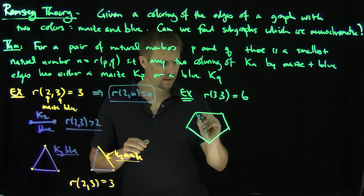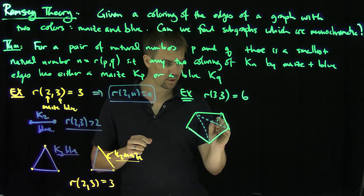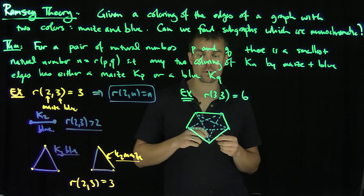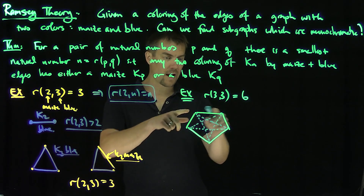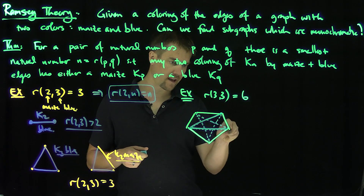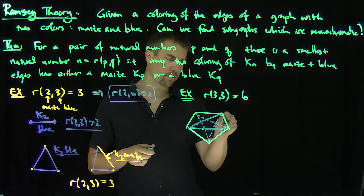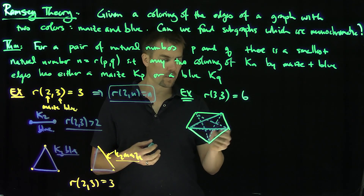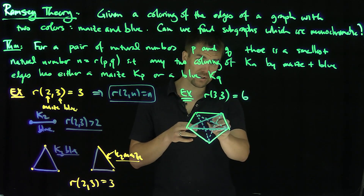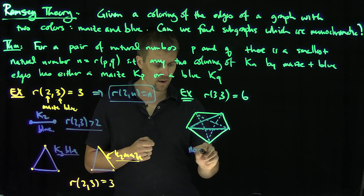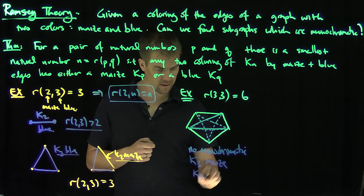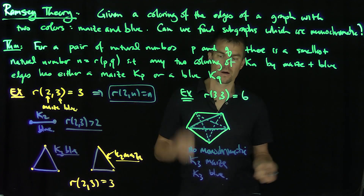I'll color the interior edges of this K5 blue. So what's K3? K3 is a triangle. Can I find any monochromatic triangles? The outside edges of the pentagon are all colored maize. But if I look at a triangle connecting three of these vertices, that K3 is not monochromatic blue. And looking at the outside, there's no monochromatic maize triangle either. Note that the intersection of edges inside is not a vertex. So there's no monochromatic K3 maize or K3 blue. This shows that R(3,3) is bigger than 5.